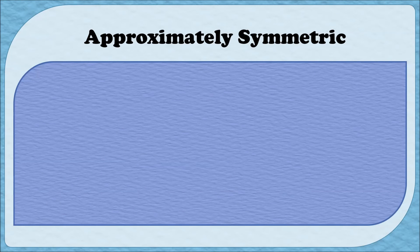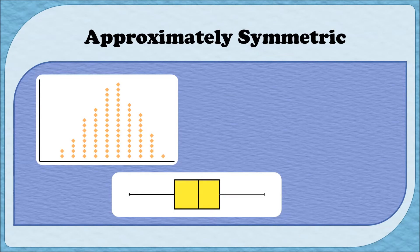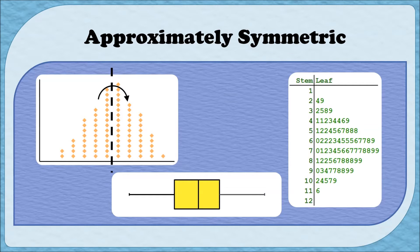Now let's examine some other approximately symmetric graphs. This type of graph is called a dot plot, and it's the graph that we'll be making towards the end of this video. A graph like this is called a box plot — we're going to make box plots in the third module — and this third type of graph is called a stem and leaf plot. Each of these three graphs is approximately symmetric because if we were to fold it down a center line the two sides would be approximately the same.